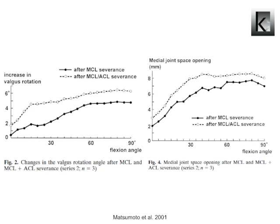It has become commonly agreed on that the superficial MCL is the primary valgus stabilizer of the knee. In these figures, you see what happens when the MCL, the ACL, or a combination of them are cut. A significant change in the medial joint space opening can be seen when the MCL is cut, and the medial joint space opens slightly more when the ACL is also cut.